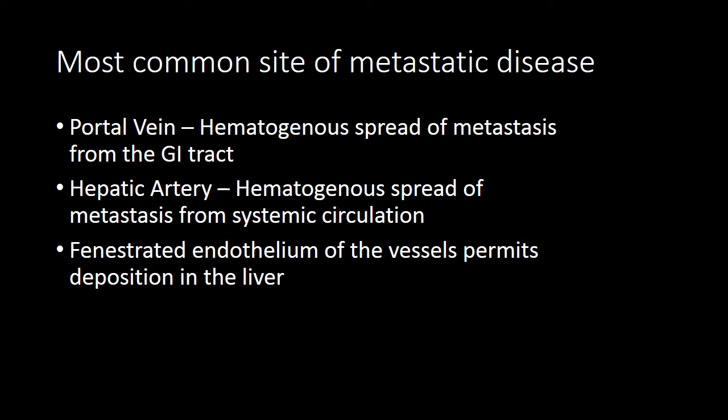The portal vein receives all of the mesenteric drainage from the GI tract, and a number of different GI tract tumors will spread hematogenously, depositing predominantly within the liver. The hepatic artery receives blood from the systemic circulation, and tumors outside of the GI tract can spread through the systemic circulation to the liver via the hepatic artery.